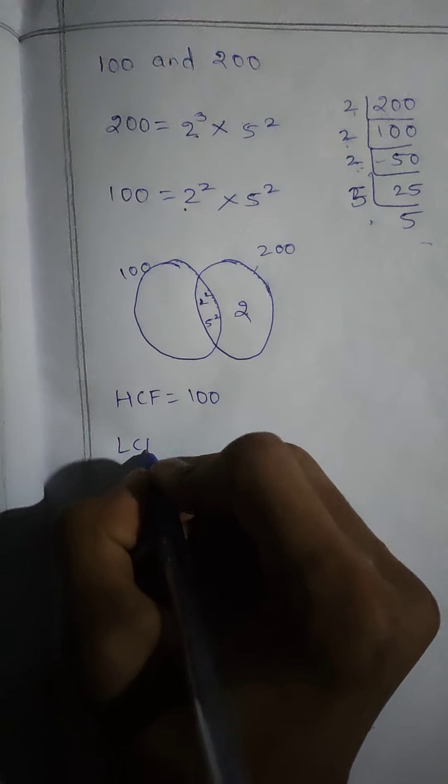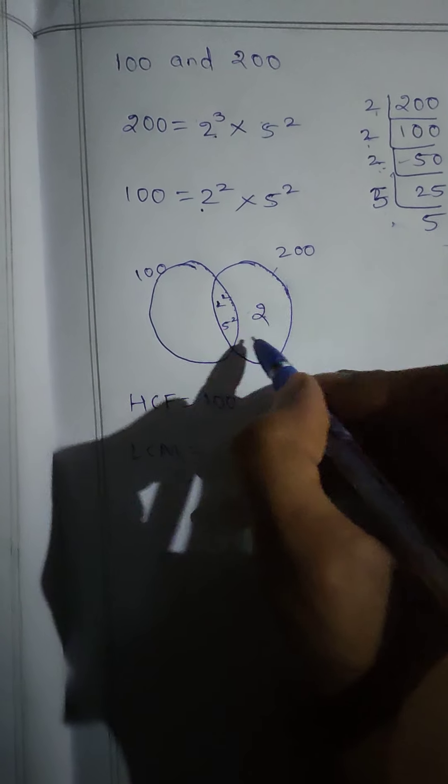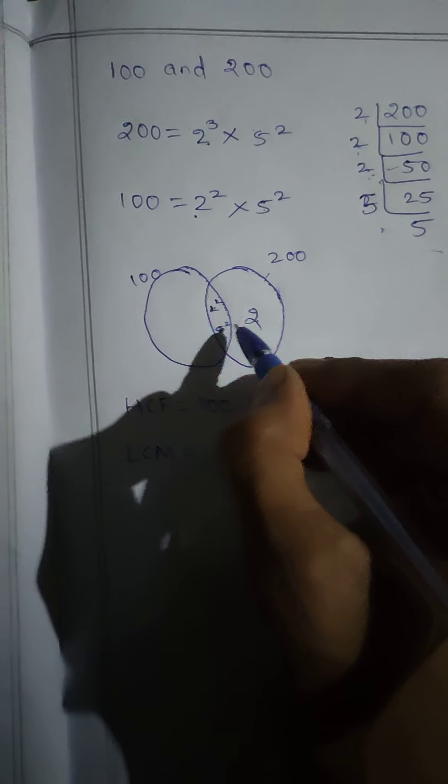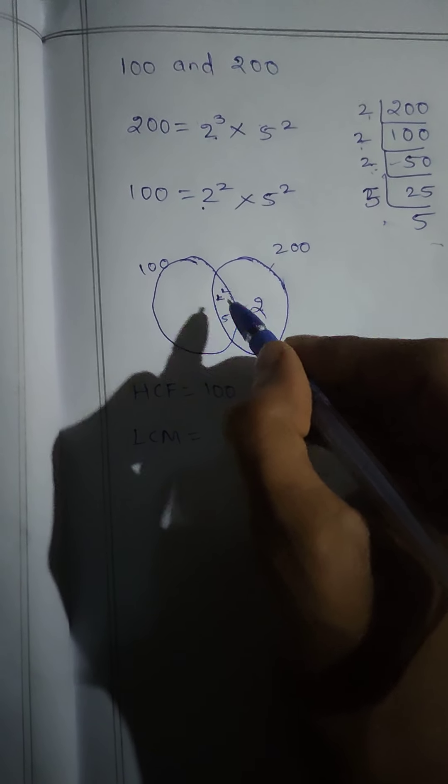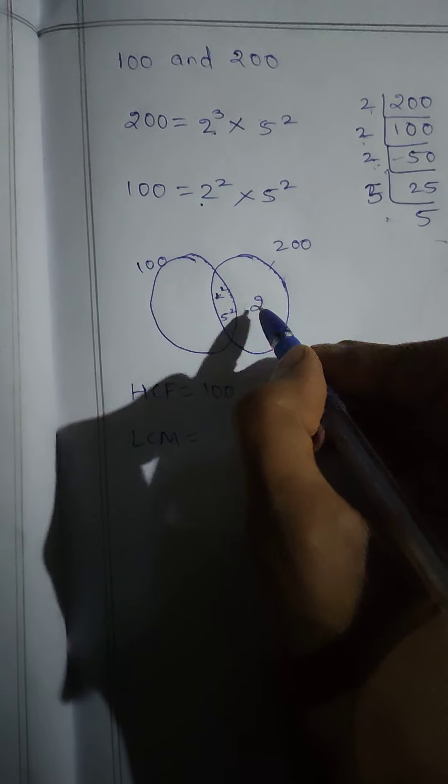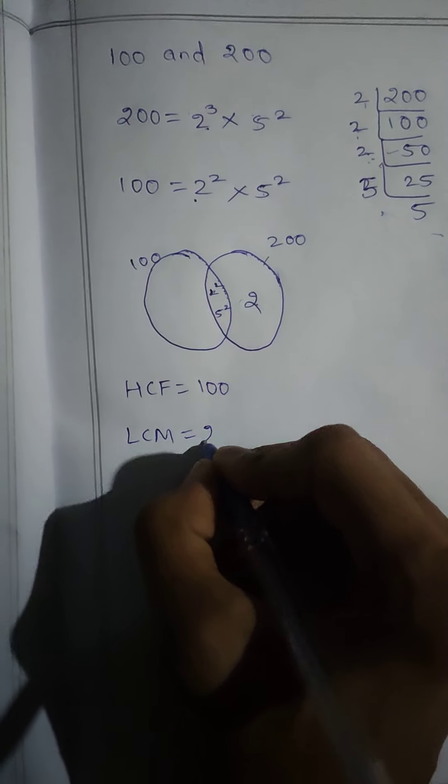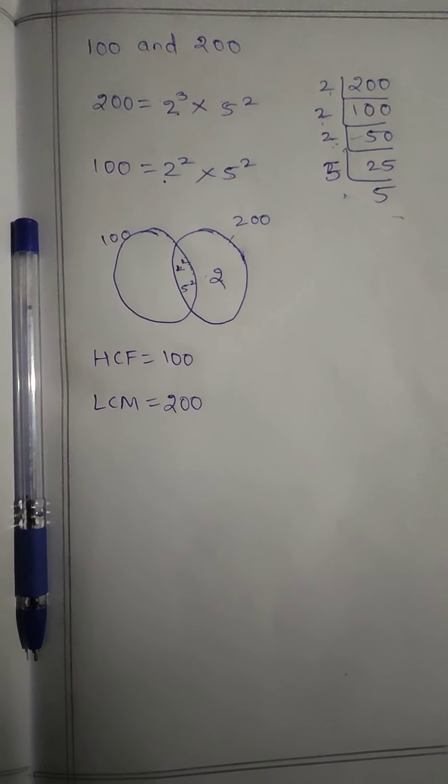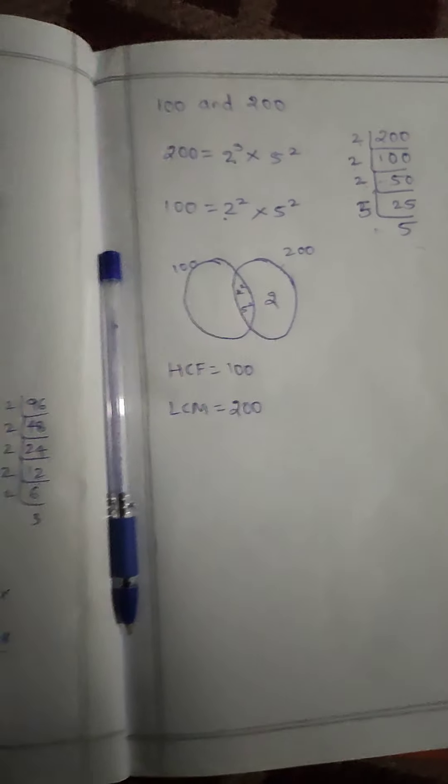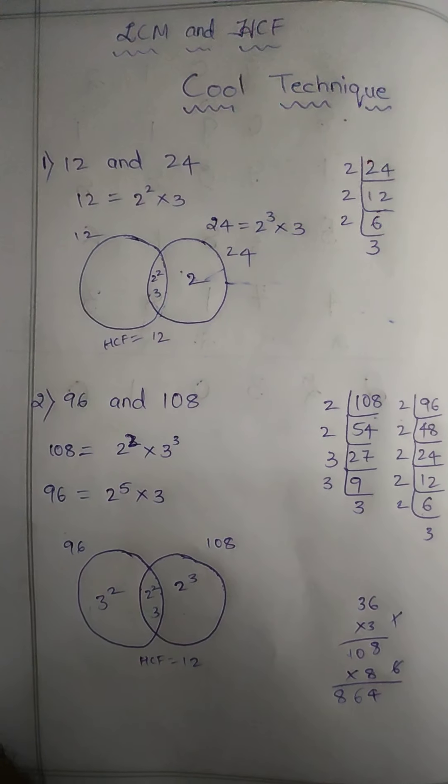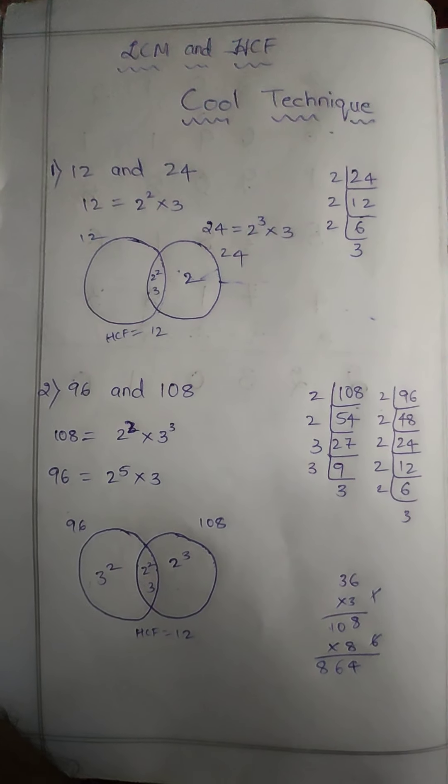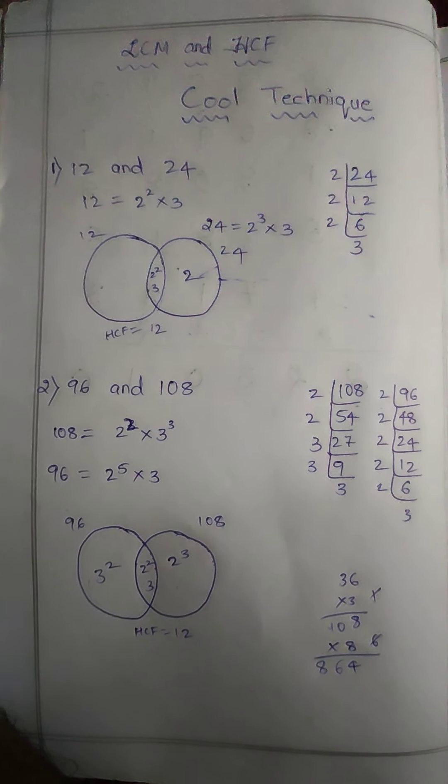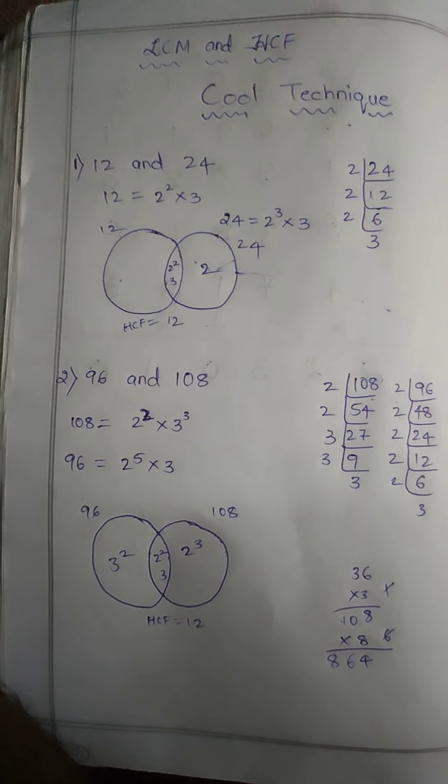LCM means you multiply all numbers: 2 squared is 4, into 5 squared is 25, that's 25 into 4 which is 100, into 2 is 200. So friends, I think the topic LCM and HCF of two numbers is cleared to you. Please like and subscribe to my channel to get more videos. Thank you for your support.